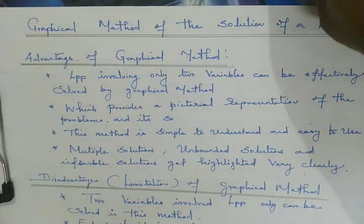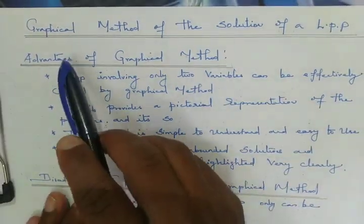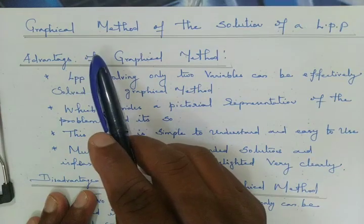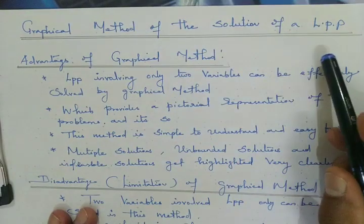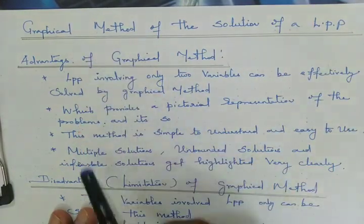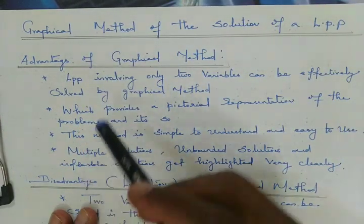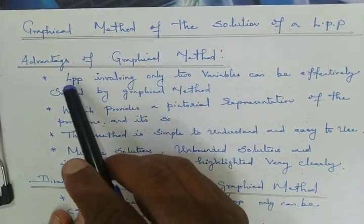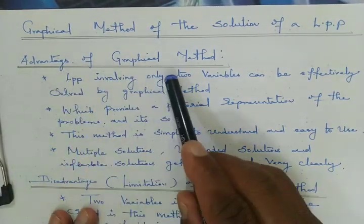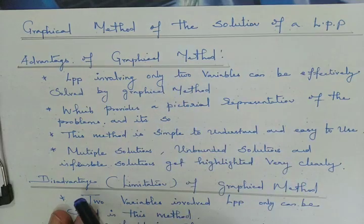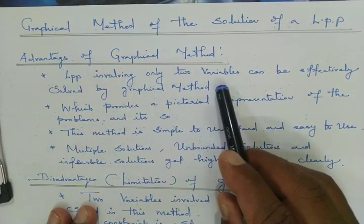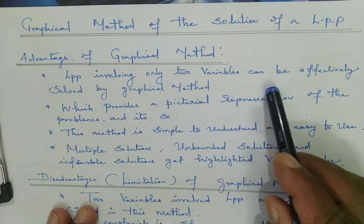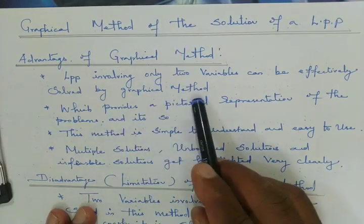Good morning friends. This is a continuation of linear programming problem in operations research. Here we can solve the linear programming problem by graphical method. Before we discuss the graphical method, first we have to see the advantages and disadvantages of the graphical method. LPP involving only two variables can be effectively solved by the graphical method.